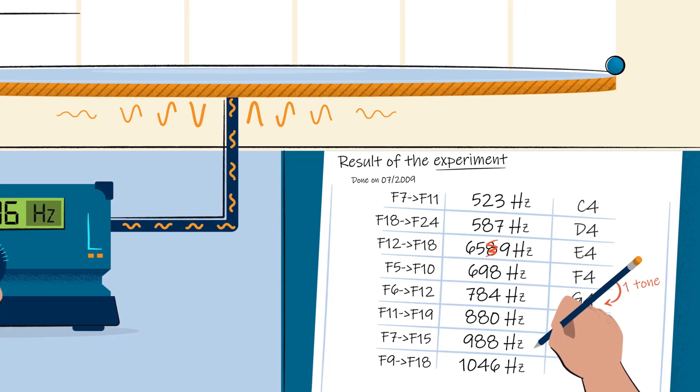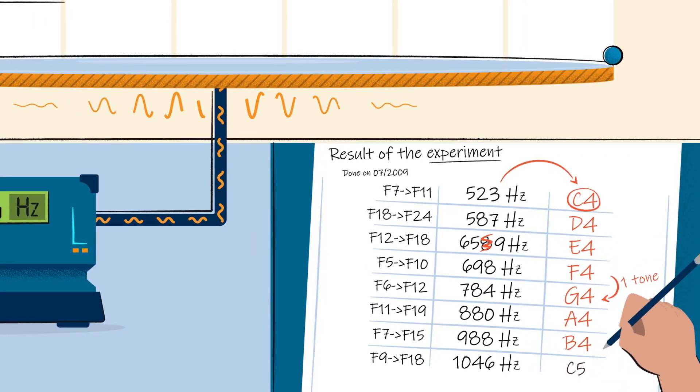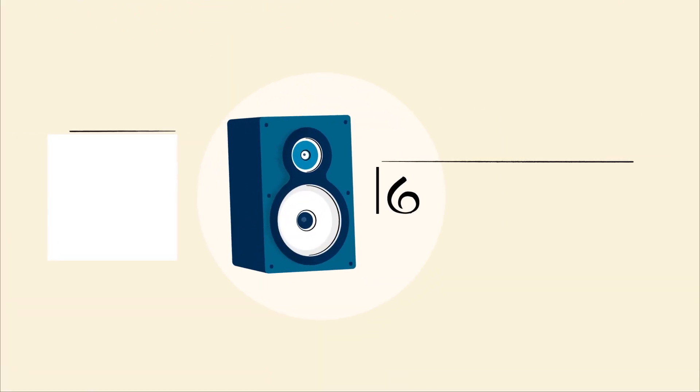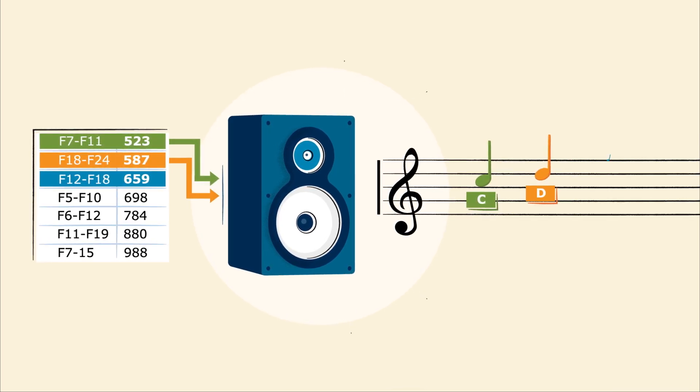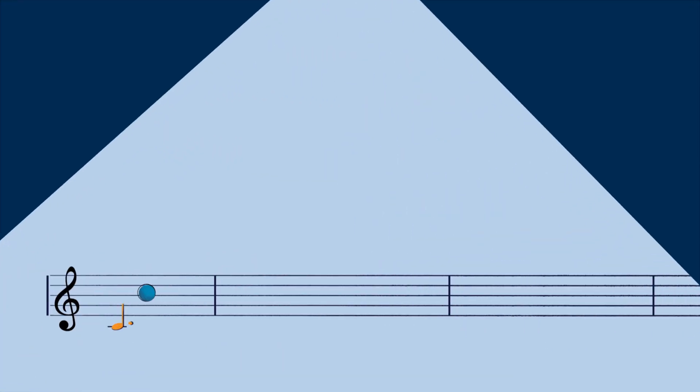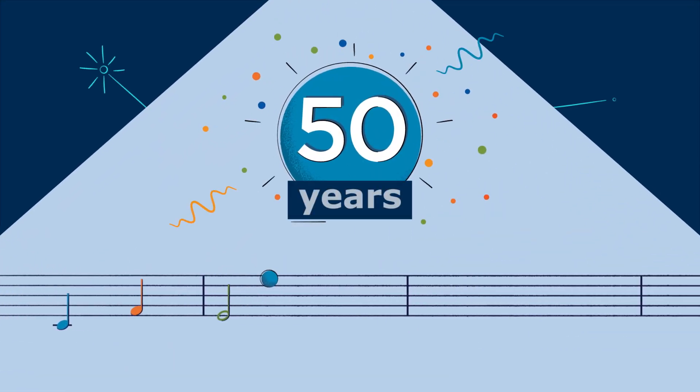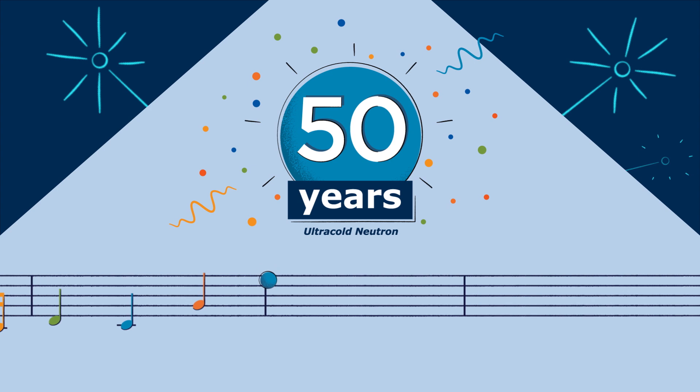They are very close to the frequencies of the notes in a musical scale. Which means that if you make the membrane of a speaker vibrate at these frequencies, you get a C, D, or E. So let's celebrate the 50th anniversary of the discovery of ultra-cold neutrons together in music.